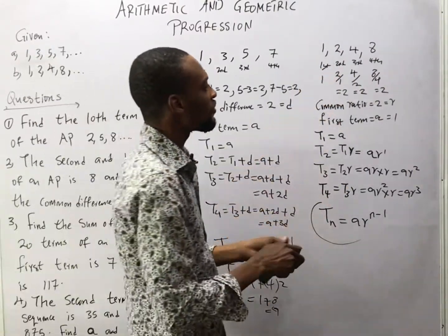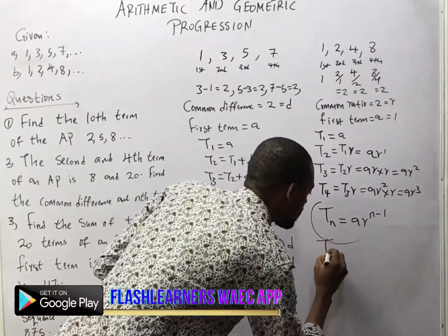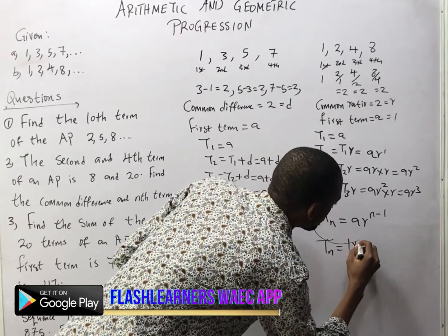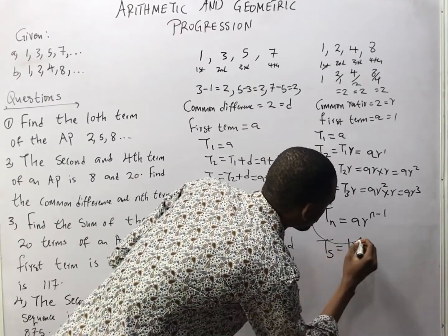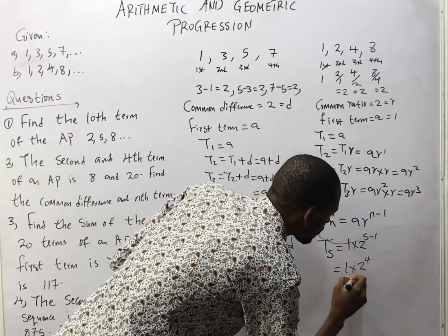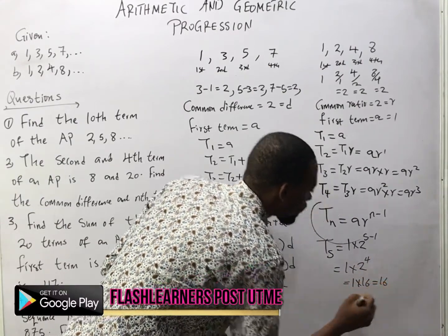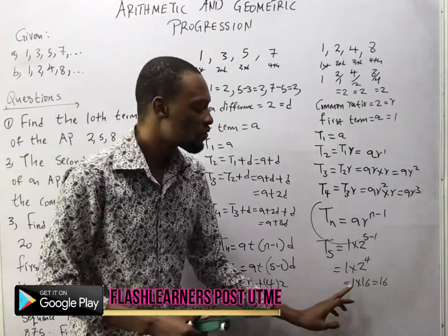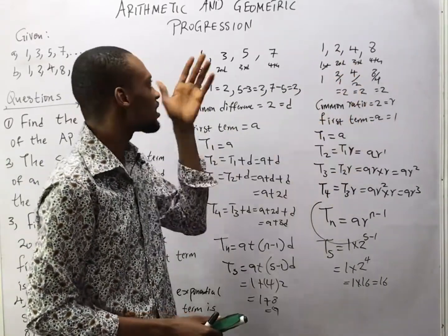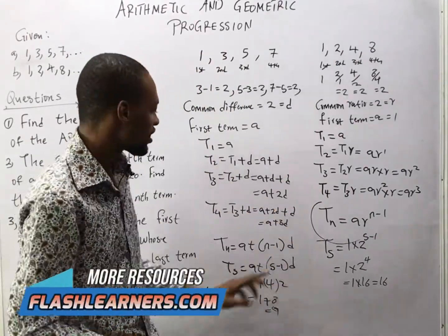For the GP sequence 1, 2, 4, 8, the fifth term should be 16. Let's use the formula: Tn = A × R^(n-1). First term is 1 and common ratio is 2. So T5 = 1 × 2^(5−1) = 1 × 2^4 = 1 × 16 = 16. So for any confirmed GP, you can look for the 20th, 30th, or 40th term using this formula.